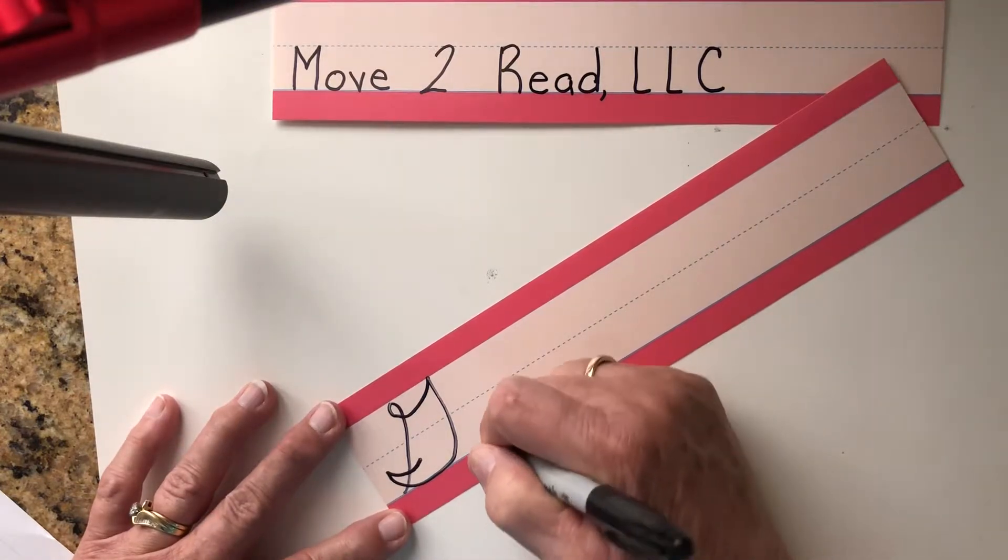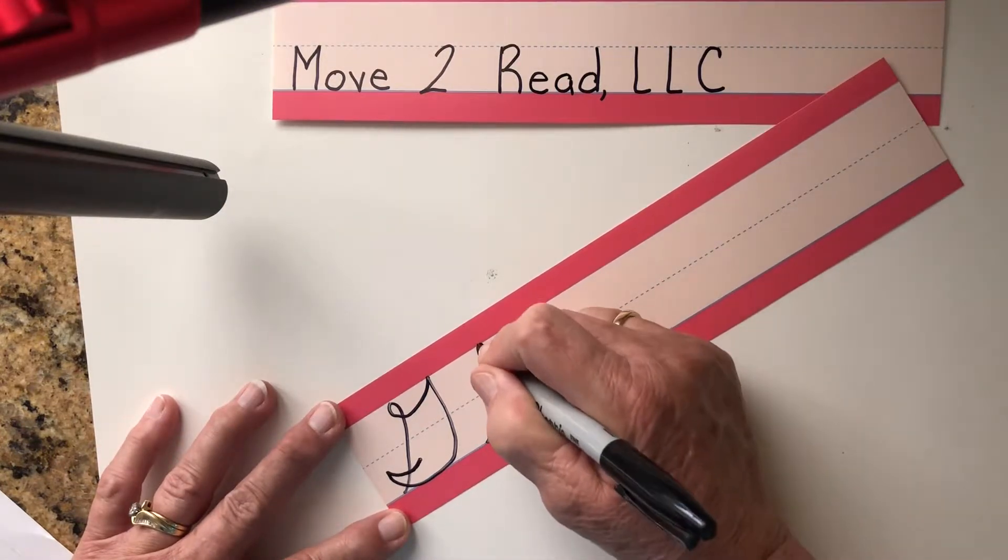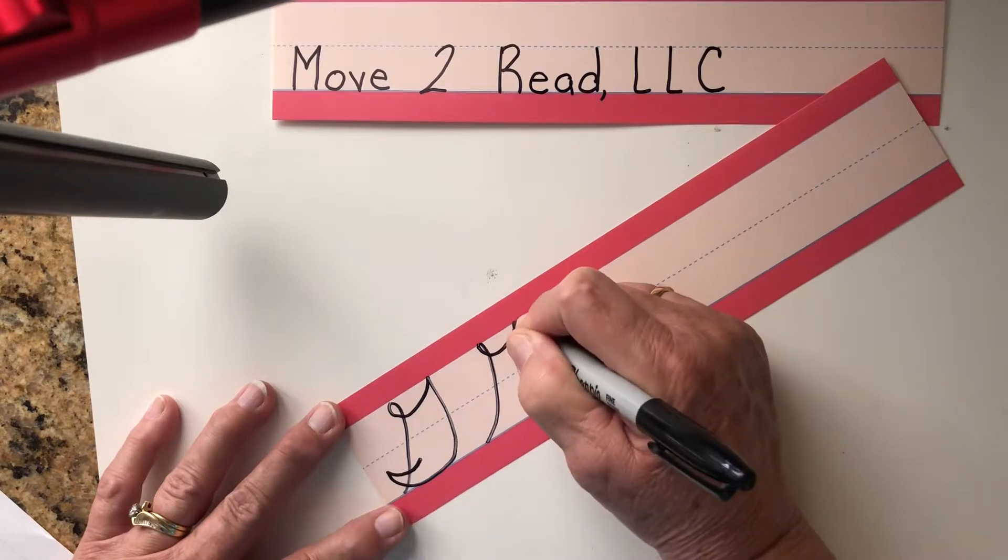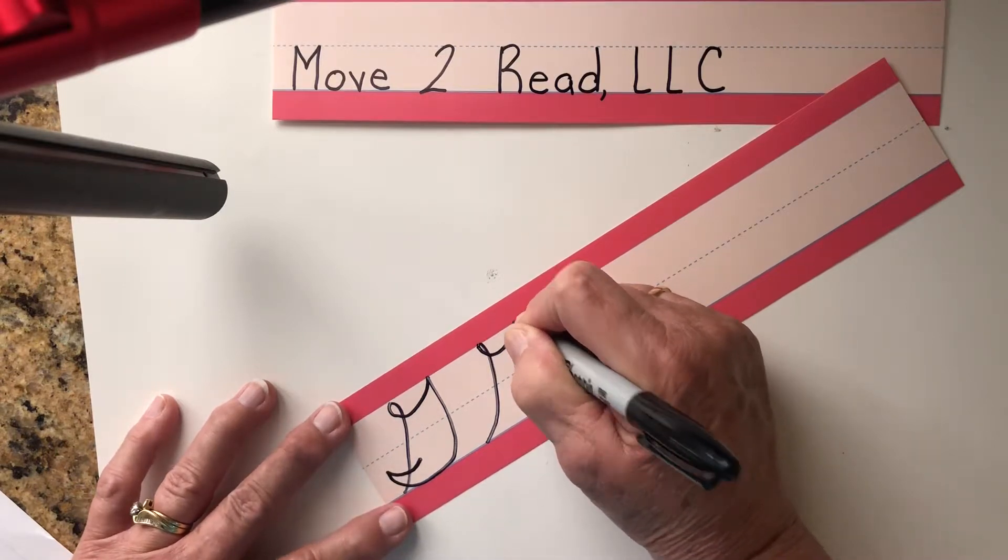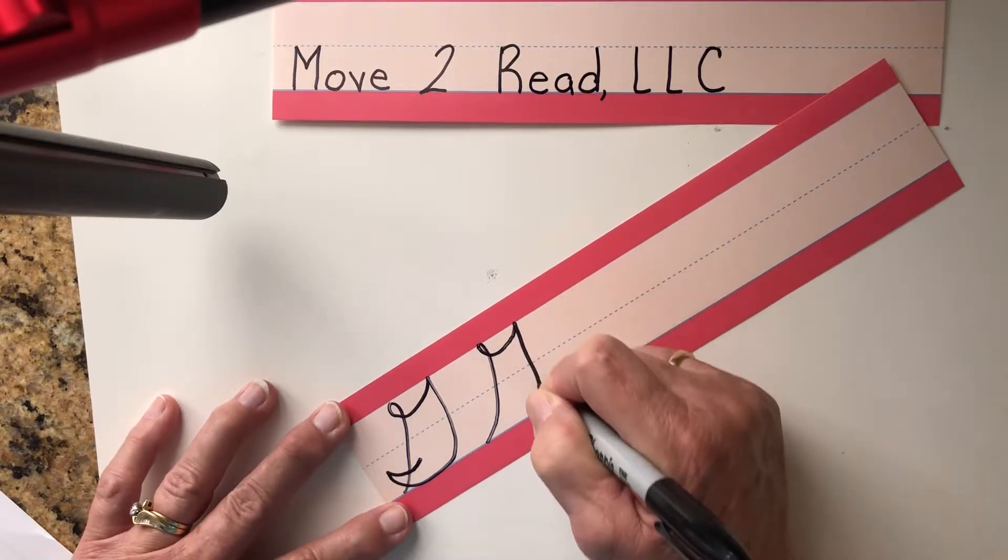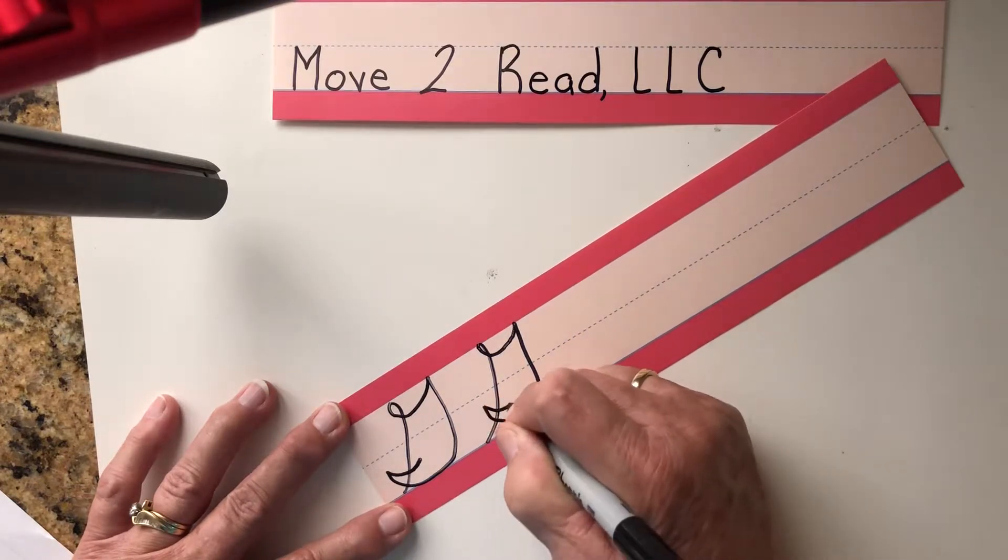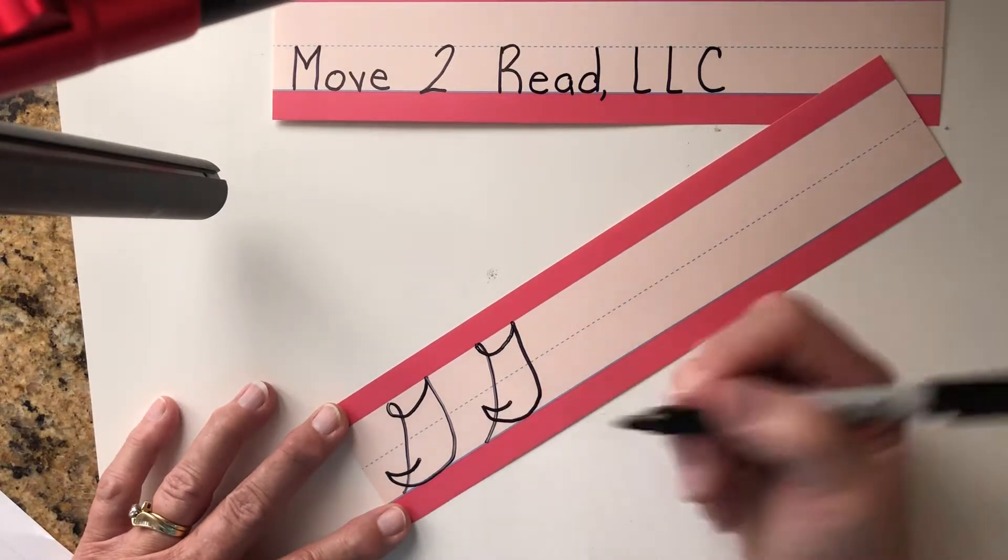So that is going up from the bottom, little loop, that kind of looks like a smile too. Smiley touching the top, make a big belly, put on a smile at the bottom.